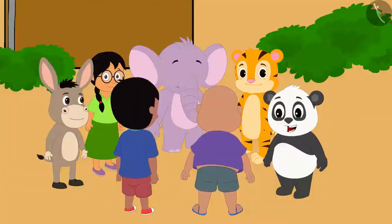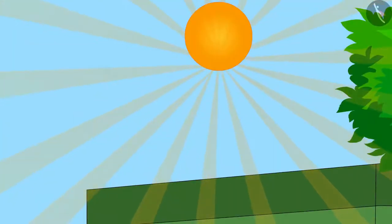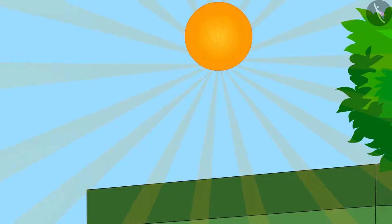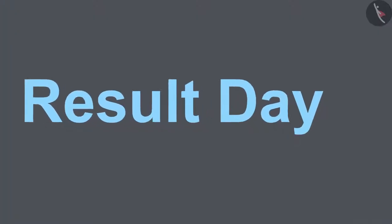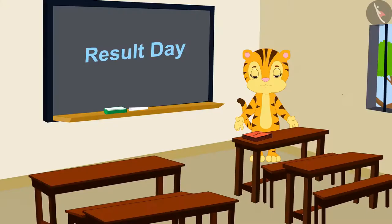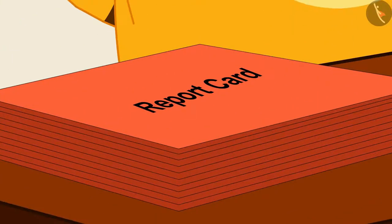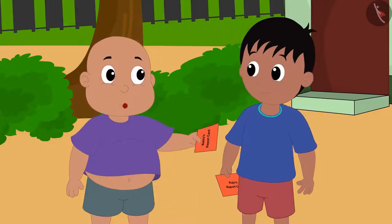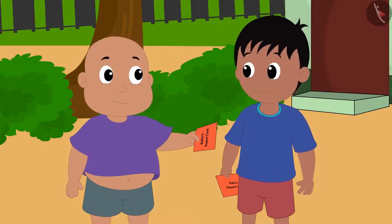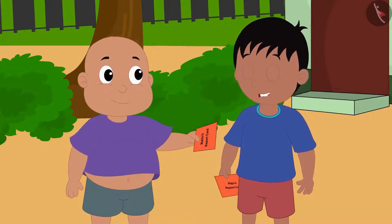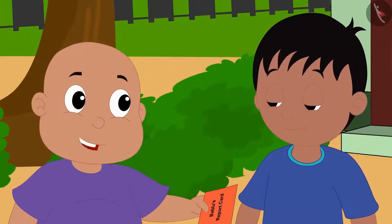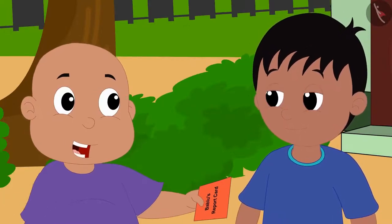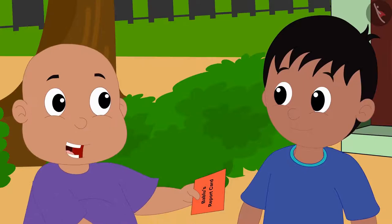The exam is over and summer vacation is about to begin. But before that comes an important day — result day. Today, all the children have come to school to get their report cards. Raju says he got such good marks, and Bablu says he too got very good marks. Bablu suggests they make bar charts of their marks so they can compare them at a glance.